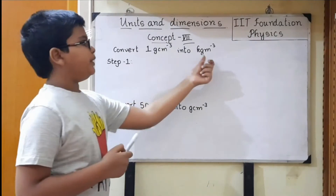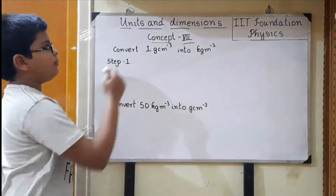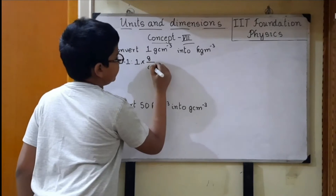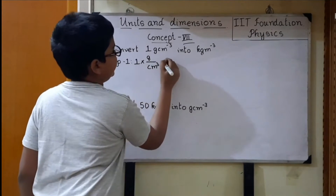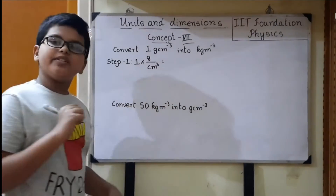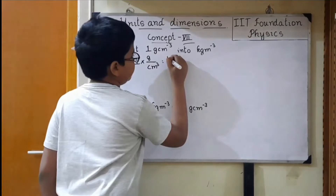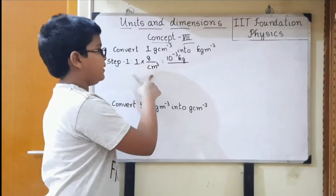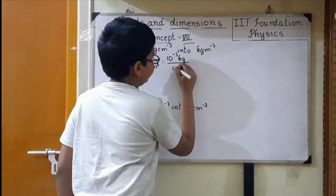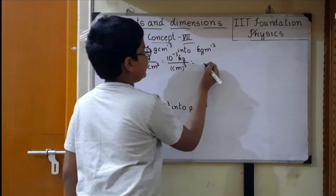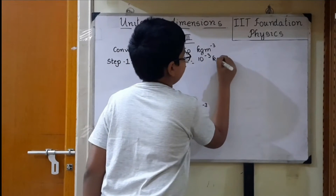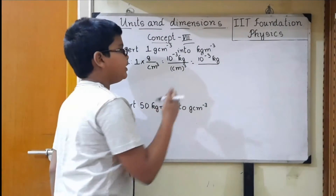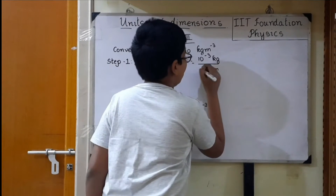Convert 1 gram per centimeter cube into kg per meter cube. 1 gram per centimeter cube can be written as 1 into gram divided by centimeter cube. 1 gram equals 10 power minus 3 kilograms, divided by centimeter cube — centimeter whole cube. This equals 10 power minus 3 kg divided by centimeter. 1 centimeter equals 10 power minus 2 meters, so we write 10 power minus 2 meters, whole cube.